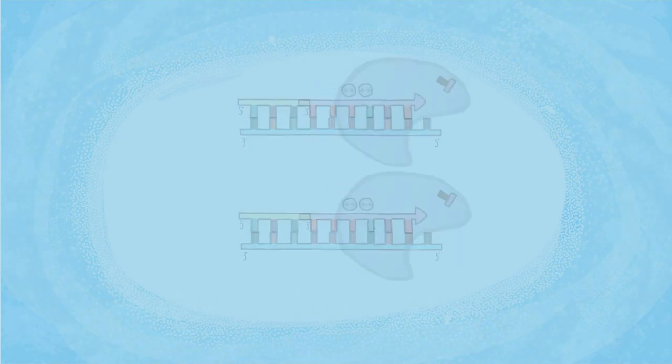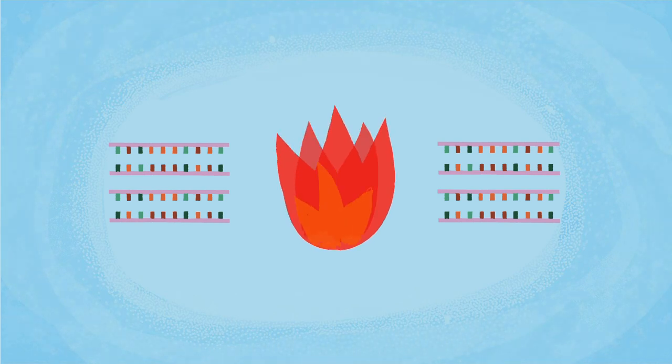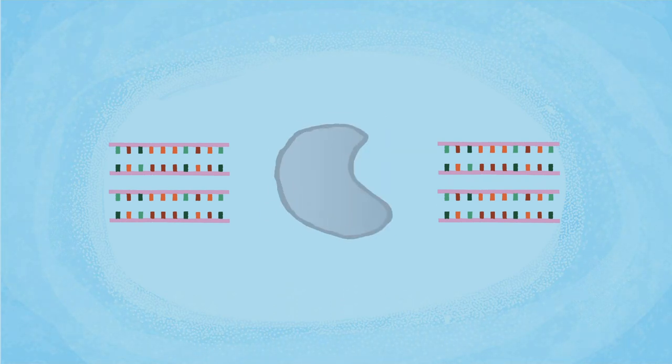The third PCR cycle doubles the number of DNA molecules produced in the second cycle. First, DNA is denatured, then primers anneal to the single strands, and DNA polymerase synthesizes complementary strands.